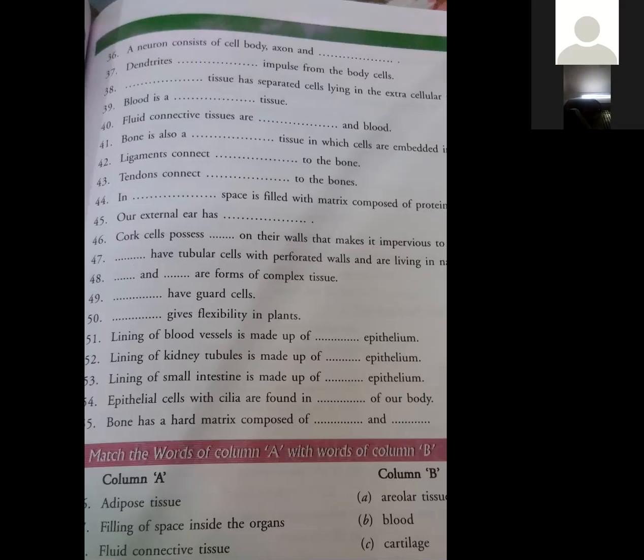Epithelial cells with cilia are found in the respiratory tract - R-E-S-P-I-R-A-T-O-R-Y. Bone has a hard matrix composed of calcium - C-A-L-C-I-U-M - and phosphate - P-H-O-S-P-H-A-T-E.